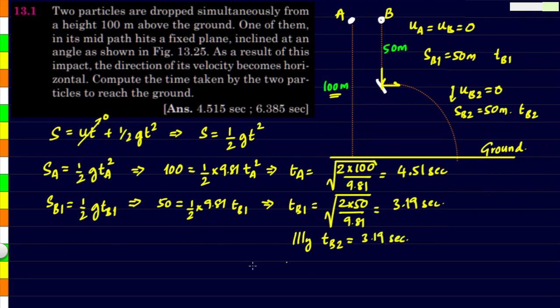The total time for B, tB, will be tB1 + tB2, which is 3.19 × 2.